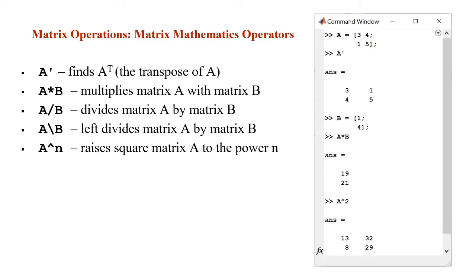Next we cover matrix operations using MATLAB operators. The transpose operator is an apostrophe after the matrix name. A times b (without the dot) performs matrix multiplication. A forward slash b performs matrix right division. A backslash b performs matrix left division. Finally, a raised to the power n (a hat n) raises the square matrix a to the power n.